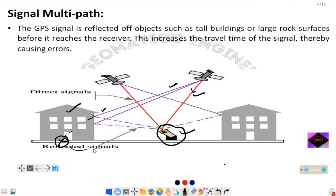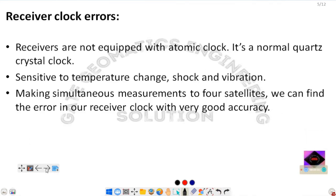Due to multipath, the measured position is offset from the true position, and this amount of error accumulates in satellite positioning. This is called the signal multipath error, caused by reflection off buildings, canyons, or any type of reflective object.